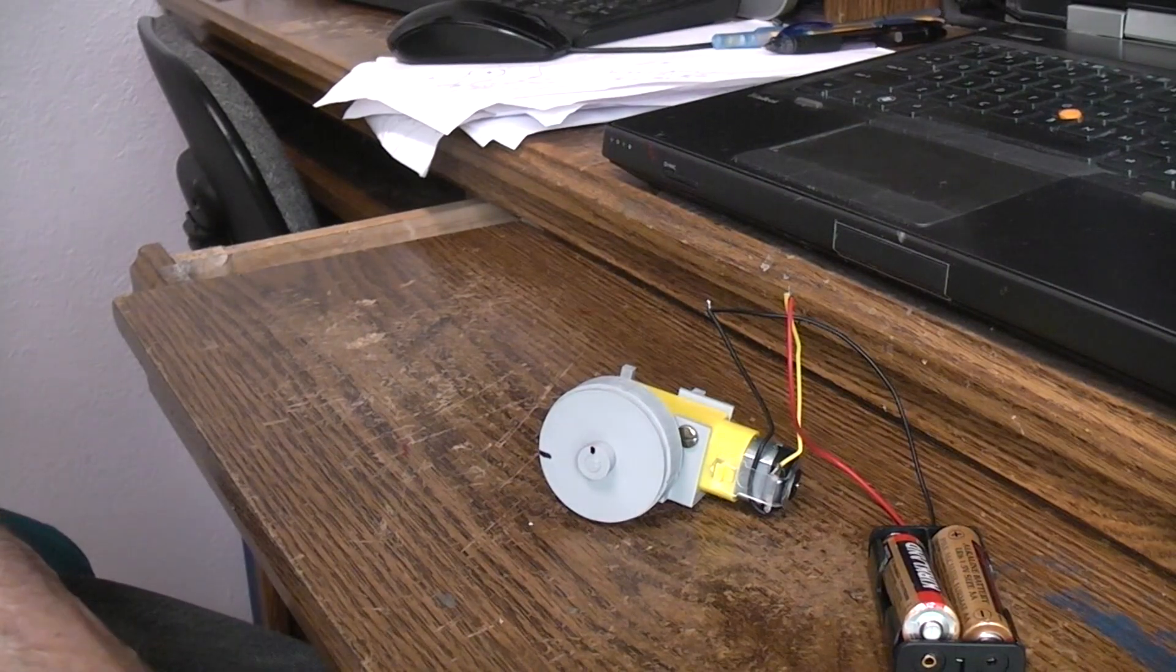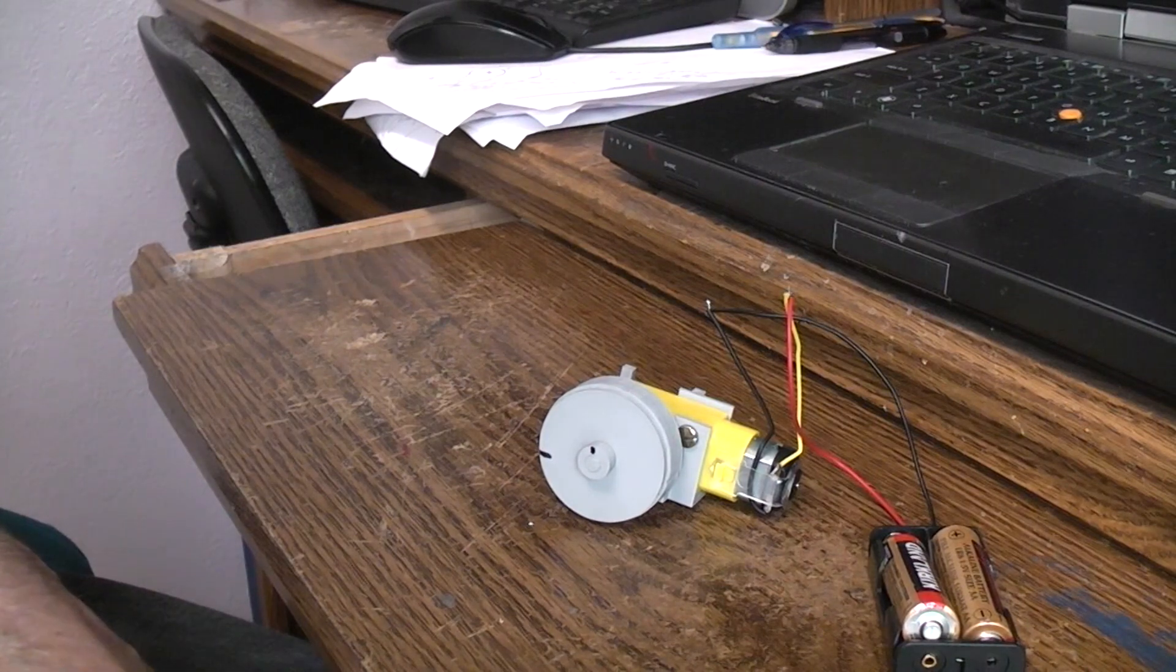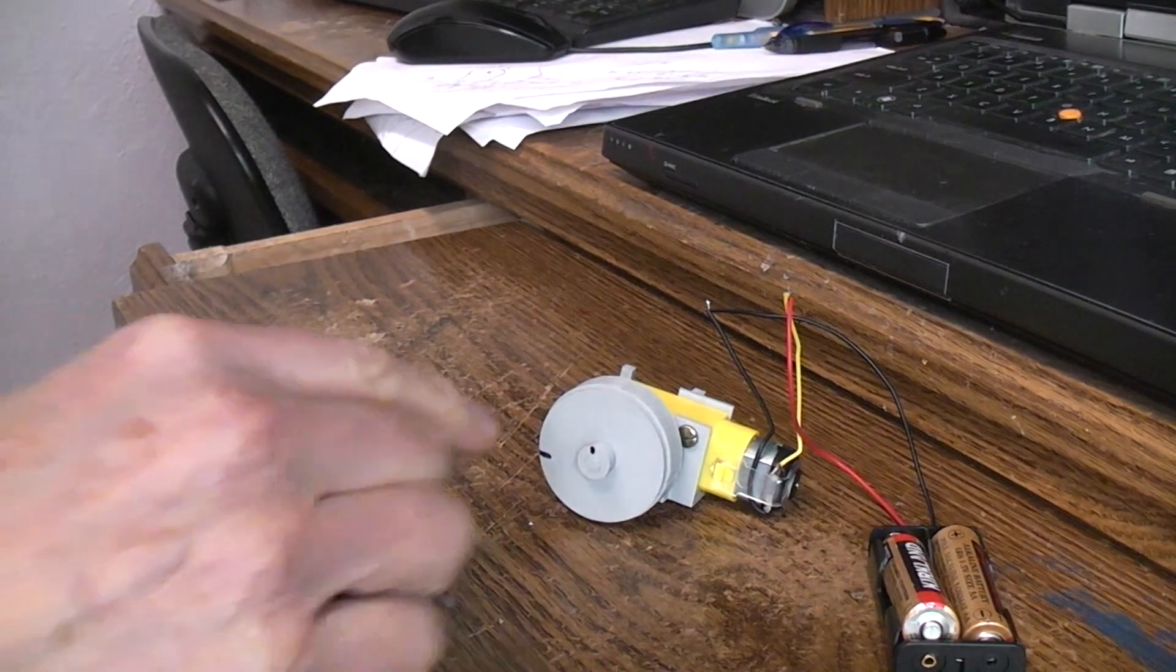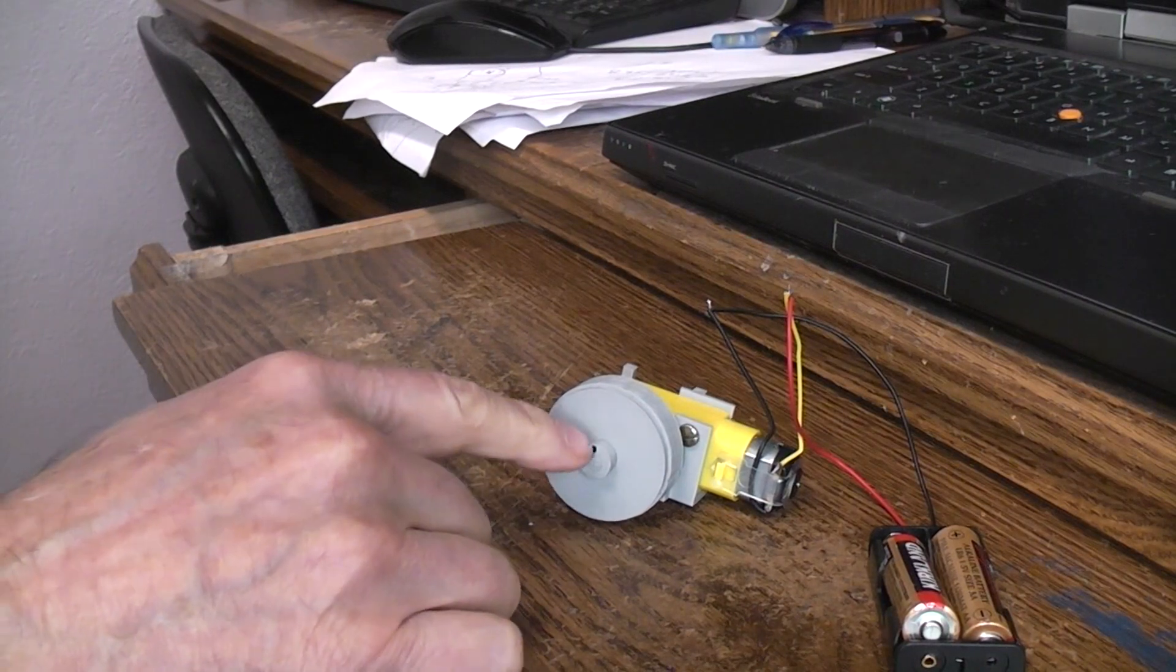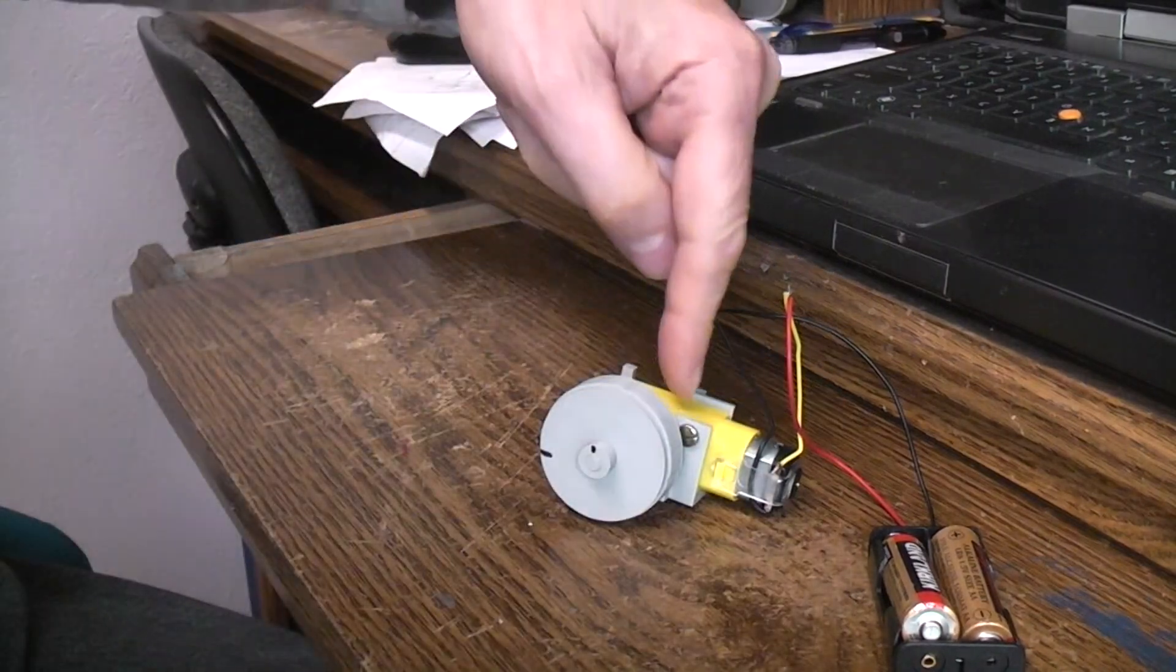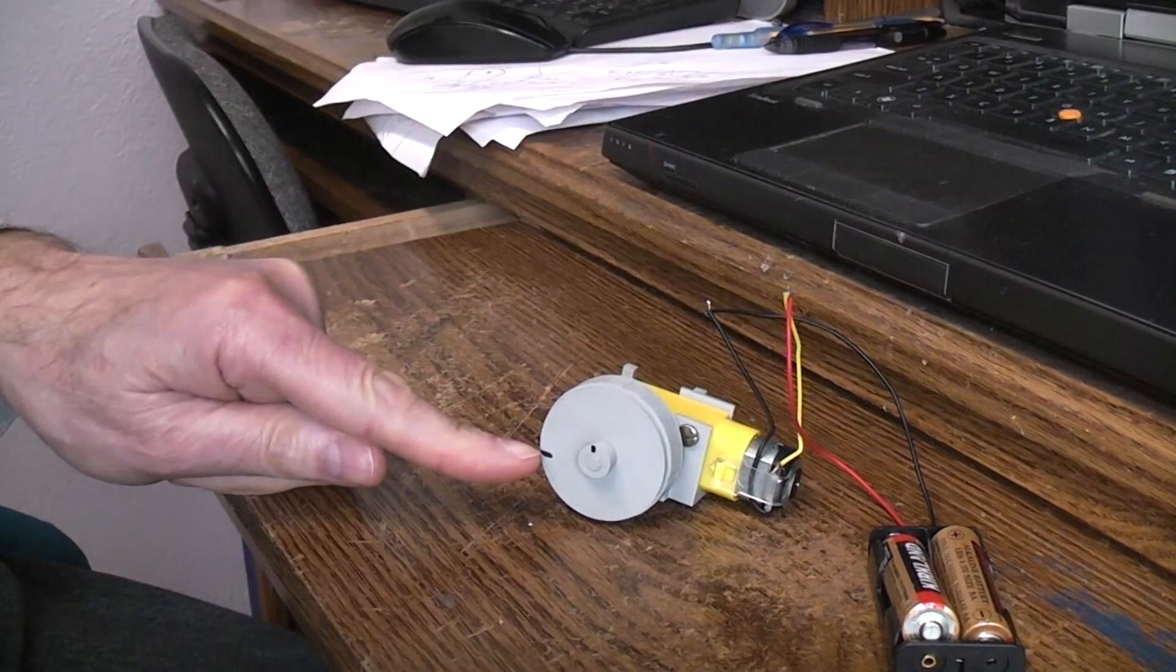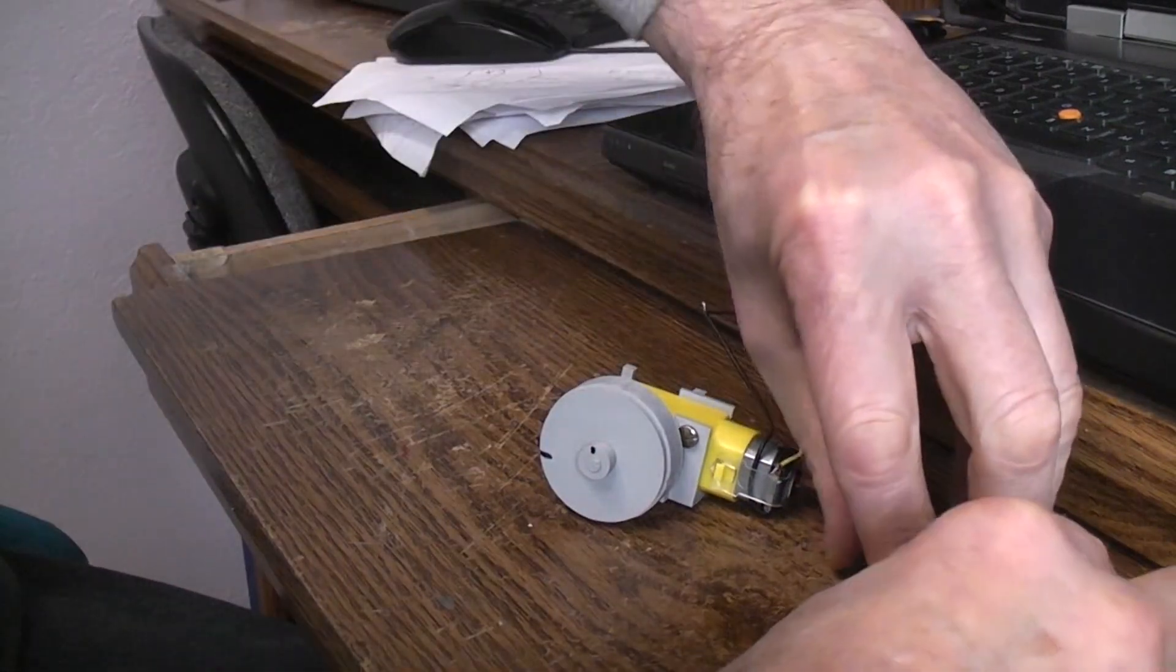Okay, here we have a 3D printed cycloidal drive. This is a 21 to 1 ratio. So this represents the output shaft of the motor. It would take 21 rotations of this TT gear motor to get one full rotation of the output of the cycloidal.